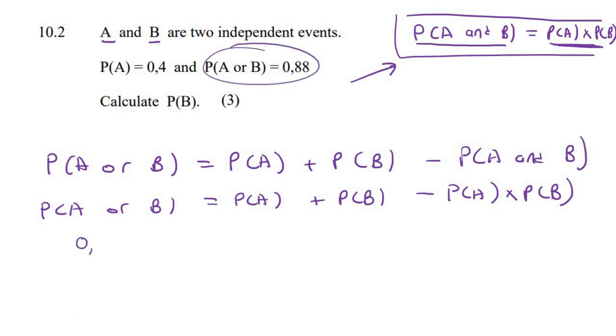So P of A or B is 0.88. P of A is 0.4. P of B is what we're trying to calculate. And then here it's P of A again, which is 0.4. P of B is what we're trying to calculate. And there we go.